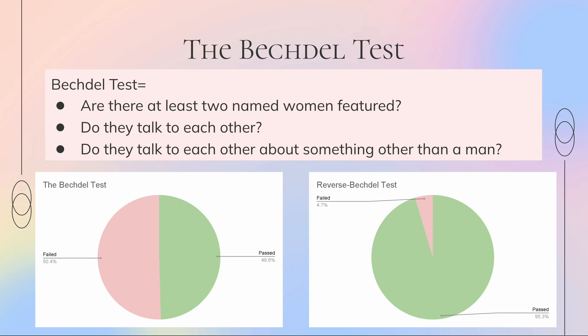An accessible way for any viewer or production to see if a movie passes the bare minimum of positively representing female characters is the Bechdel test. The Bechdel test asks if there are at least two named women who have a conversation with each other about something other than a man. Although this seems quite simple, from the 1,200 highest-grossing films of the past 40 years, less than half passed the Bechdel test. On the other hand, 95% of these films passed the reverse Bechdel test — the same criteria but for two named men talking about something other than a woman. This proves that women are still heavily underrepresented in films, and when they are on screen, they often aren't fully developed characters who even have conversations about something other than a man — they're just there to aid other characters' development.